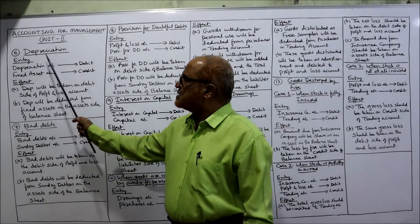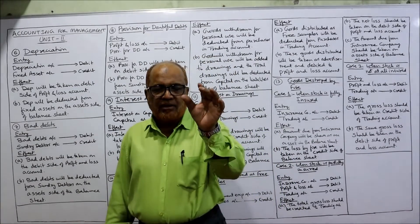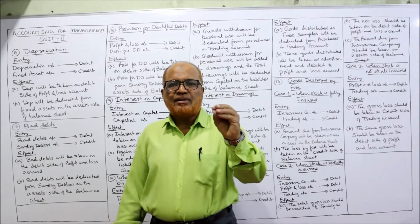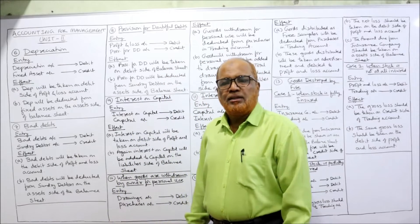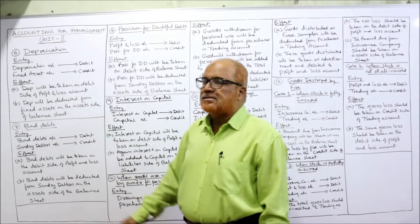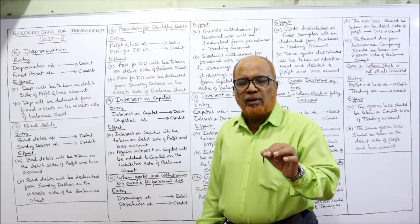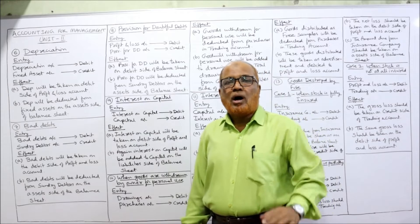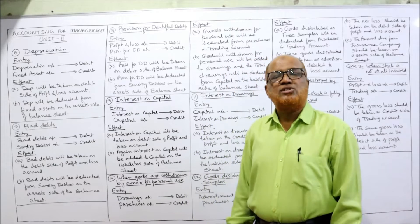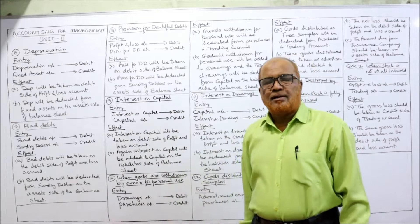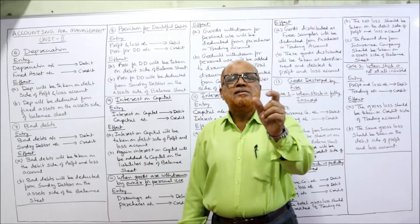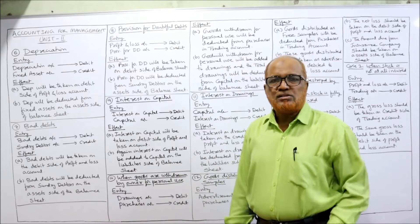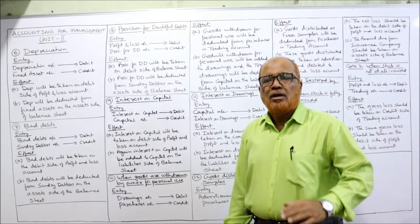The first adjustment I'll cover here is depreciation — in order, this is the sixth adjustment, because five adjustments were already completed in the last video. You'll come across depreciation as an item of adjustment in every problem. To adjust depreciation, you must know the entry. The entry for depreciation is: Depreciation Account debit, Fixed Asset Account credit.